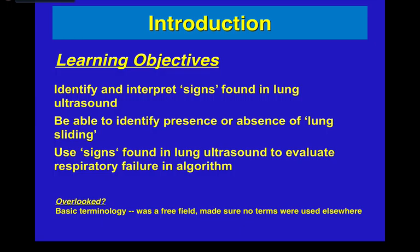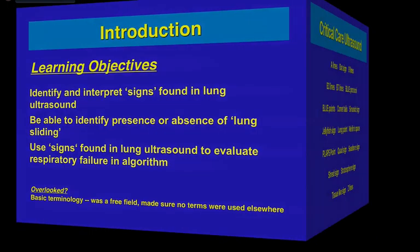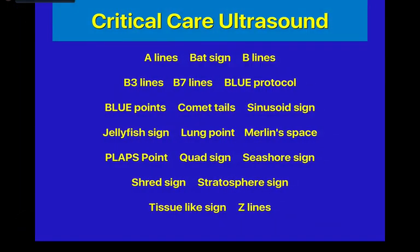Lung ultrasound has basic terminology that was somewhat overlooked. It was a free field, so many of the terms were deliberately chosen to avoid overlap with terms used elsewhere in medicine. As a result, you see all these different types of signs — A lines, B lines, Merlin space, jellyfish sign — things you might not have seen previously in other areas of medicine.